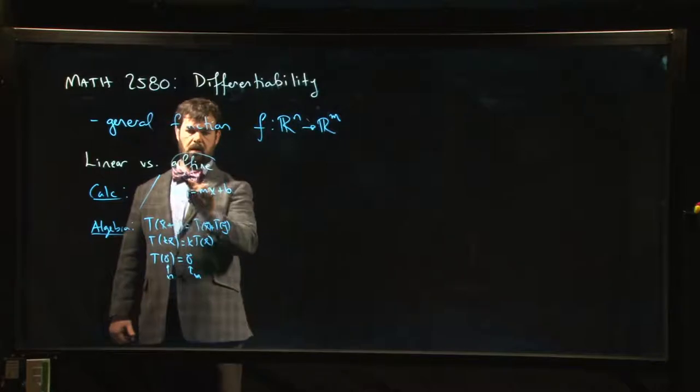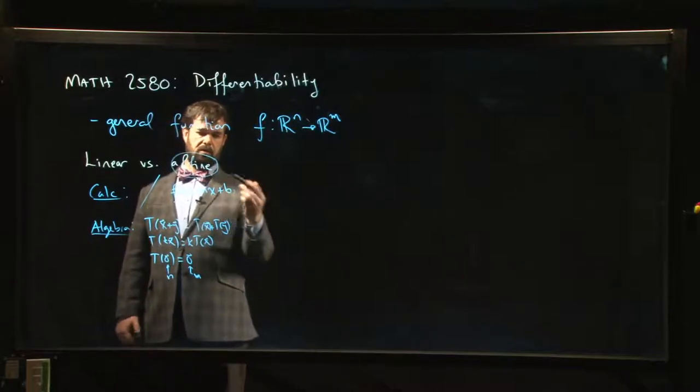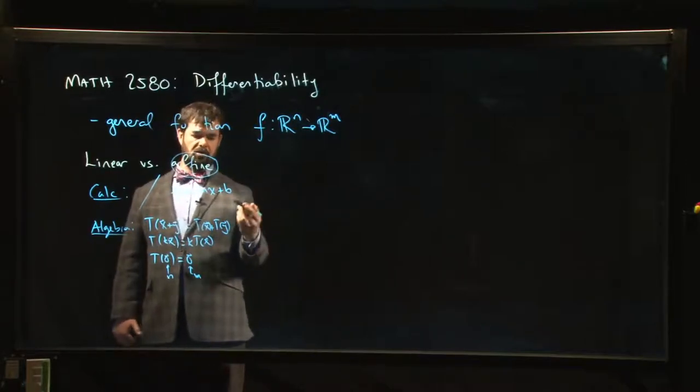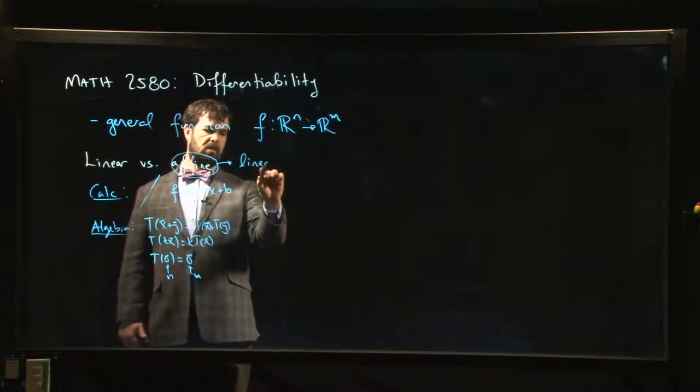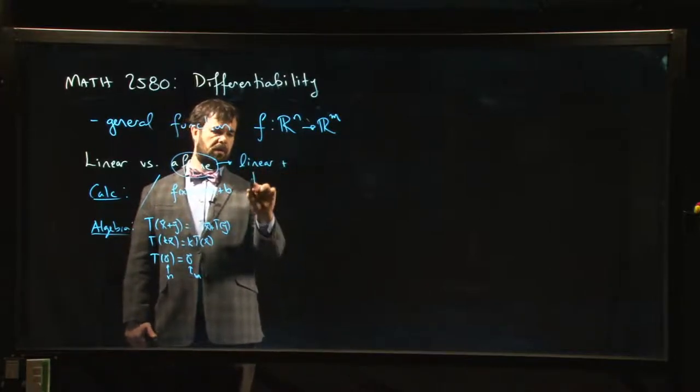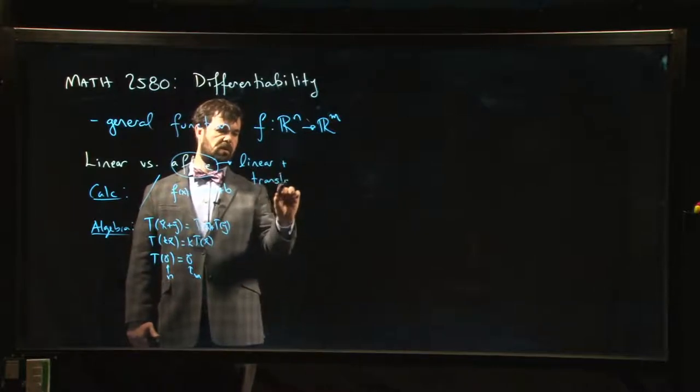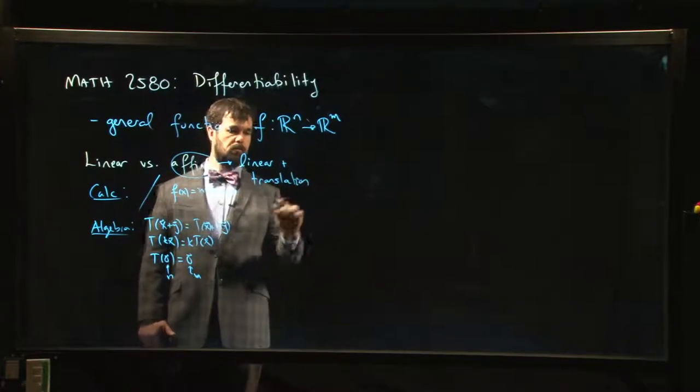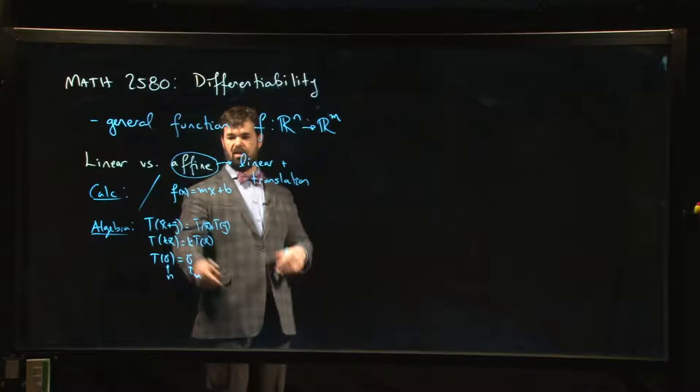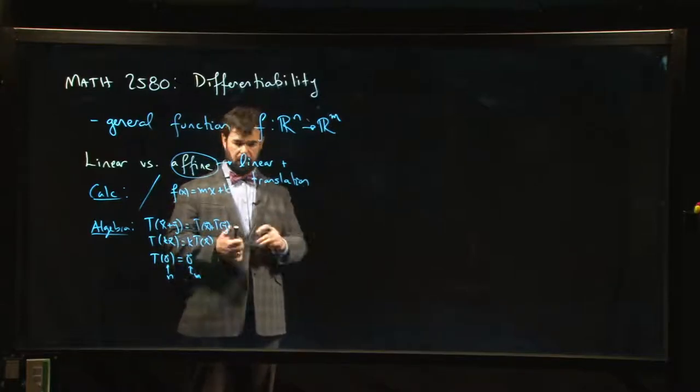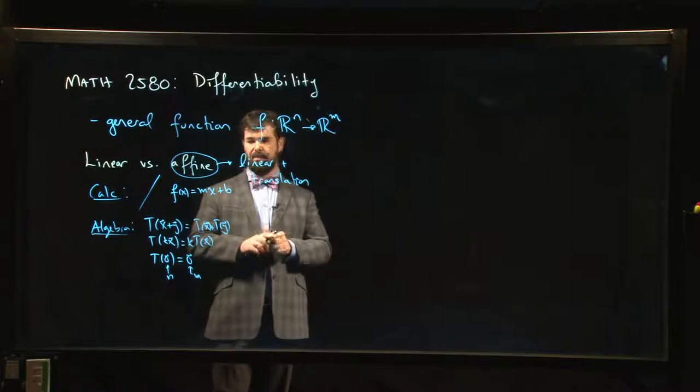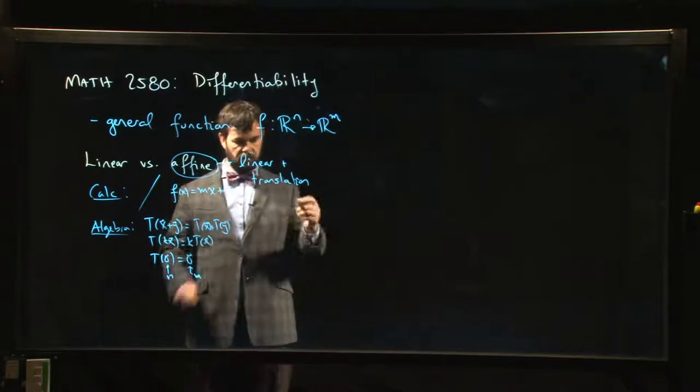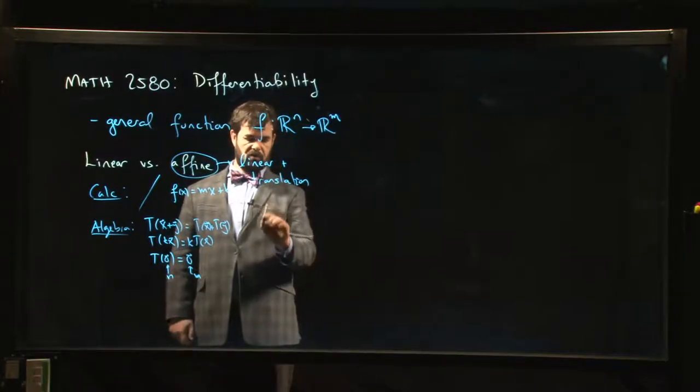One of the ways you get around it is you use this word 'affine' to refer to something which is linear plus a translation.